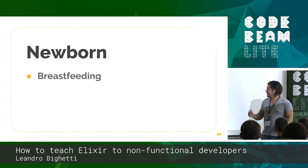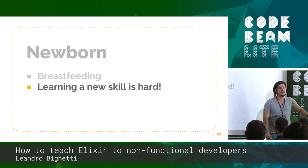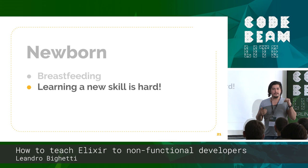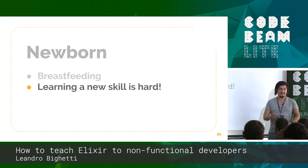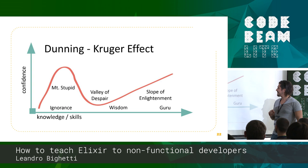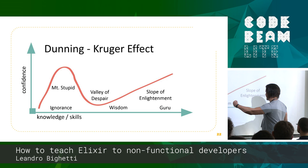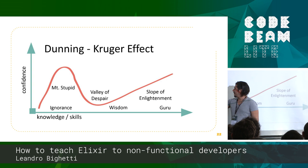Learning anything new is really hard. This is something we have to remind ourselves, especially if it's been a long time since we first learned our first functional language or first learned Elixir. When people are doing this for the first time, it's just going to be tough. I like this chart — it's the axis of confidence versus the axis of skill. You start using something and you're like, 'Oh, this is awesome! I feel great!' And then your test fails, your build fails, you don't know how to fix things, and you just plummet down to rock bottom — we call this the valley of despair.